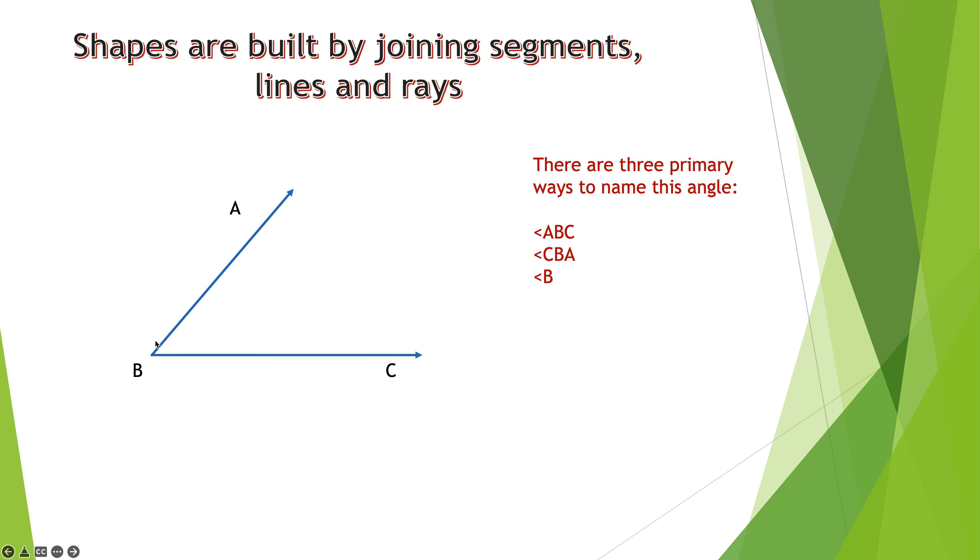Then there's angle B. Now I can't always call an angle by a single letter name because sometimes at a point like B there's more than one angle. But in this case, seeing how there's only one angle, yes I can call it angle B. So those are your three primary ways.